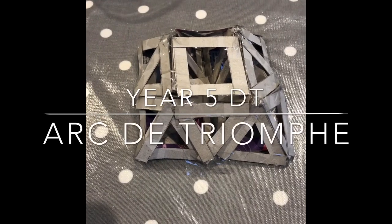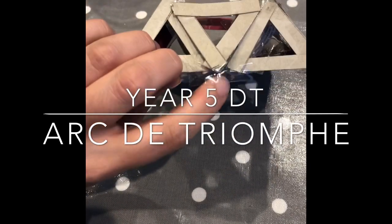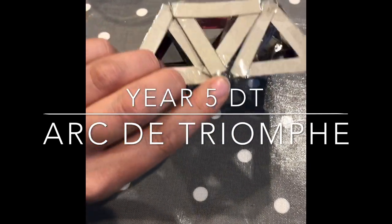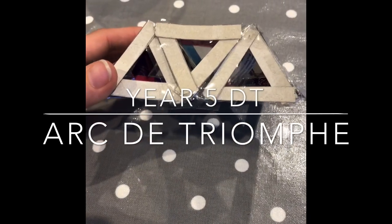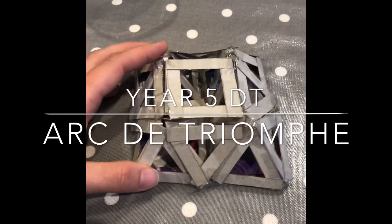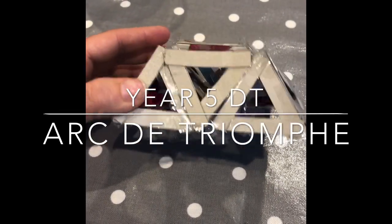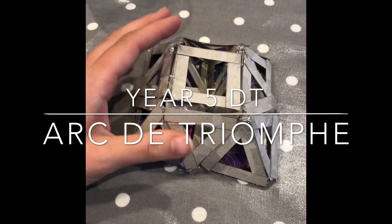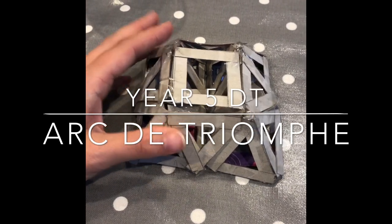Hi Year 5, here is my structure from last week. You can see that some of the sellotape has come off, don't worry too much about that. What we're going to do today is use this structure and turn it into the Arc de Triomphe, which is a famous archway in Paris that was used to represent the Napoleonic War, I believe.